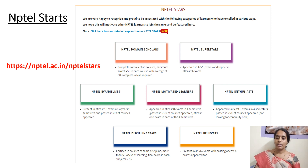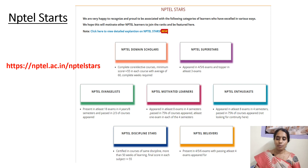Coming to the next category, NPTEL Enthusiast. This is similar to NPTEL Motivated Learners — the student should appear for at least 8 exams in 4 semesters. But the key difference is that here there is no need for continuity. If the student takes a break for a semester or two, no problem — they can continue the course and still get the NPTEL Enthusiast certificate. However, the student should still get 75% in each and every exam.